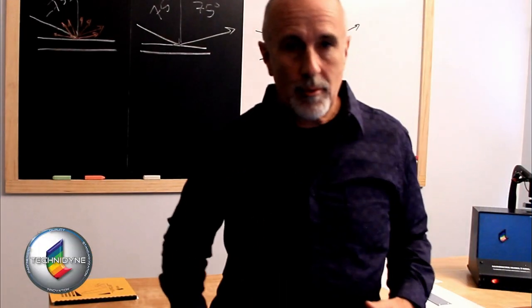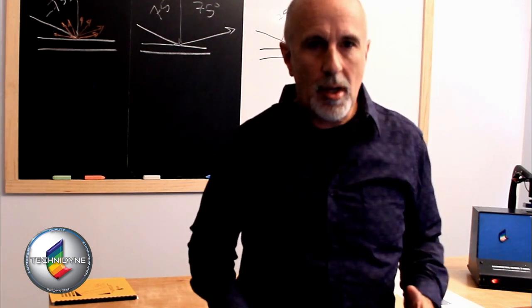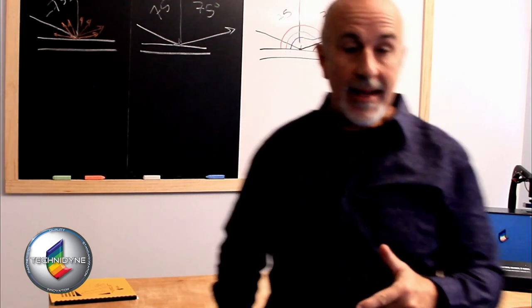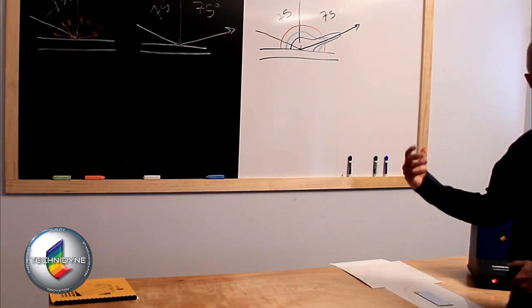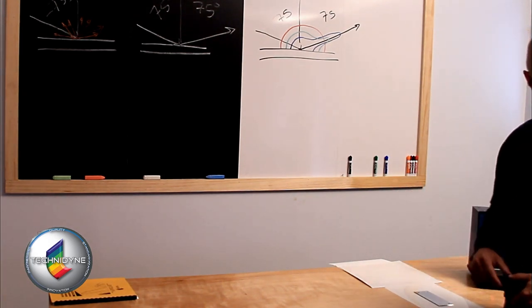All right, so to help us understand a little bit more about gloss and angles, I've got a laser pointer here and I've got those samples sitting here. Now I've turned the lights down in the room a little bit, so it may be more difficult to see some things, but it helps with illustrating this.